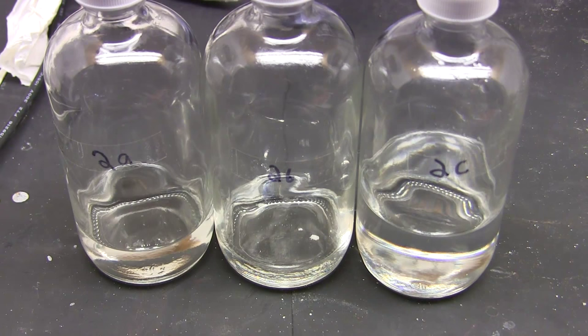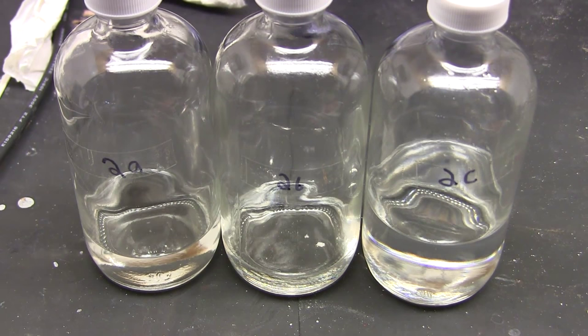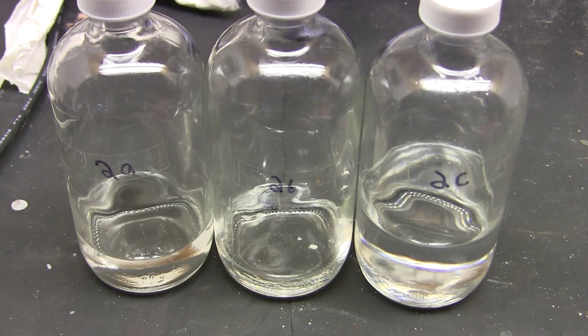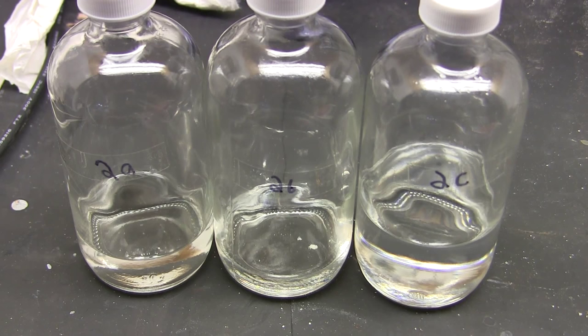And here are our fractions. 2a is the stuff that came off at 82 degrees celsius, whatever that is. Fraction 2b is the overlap of 2a and toluene which is very little. And 2c is our extra toluene. The insulated column really did help.